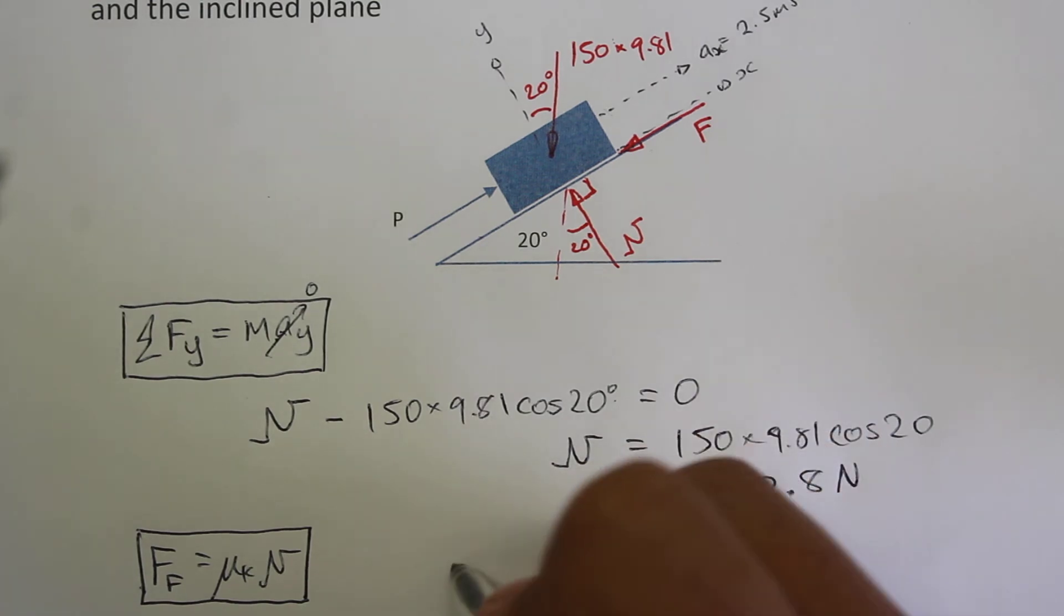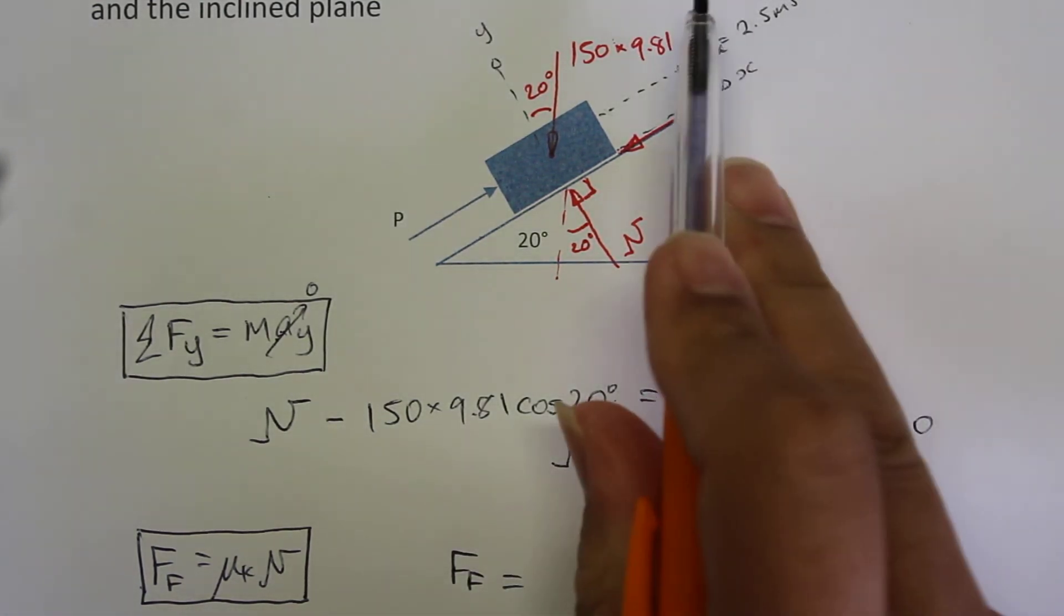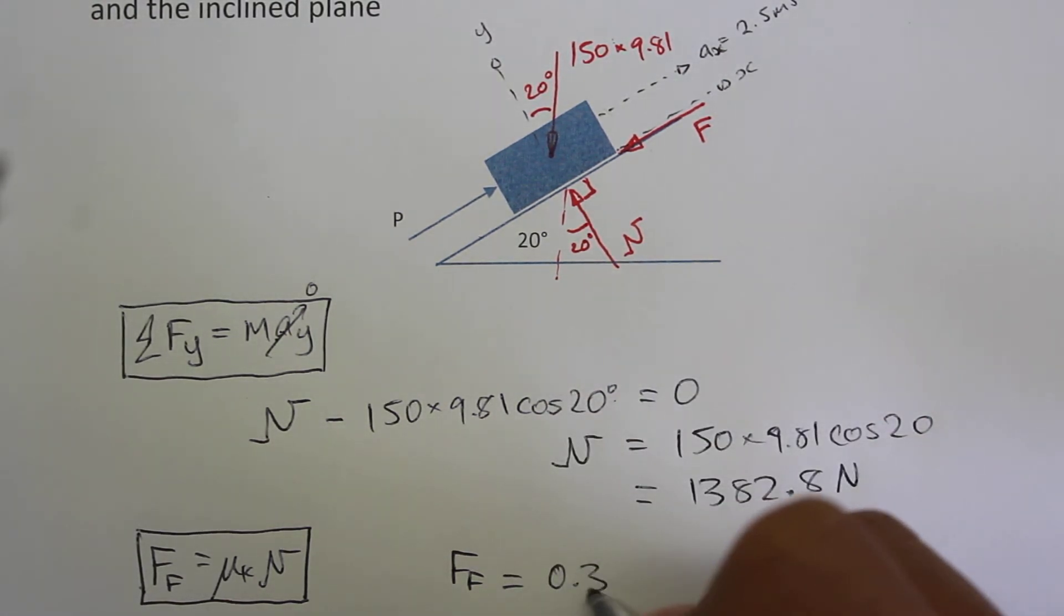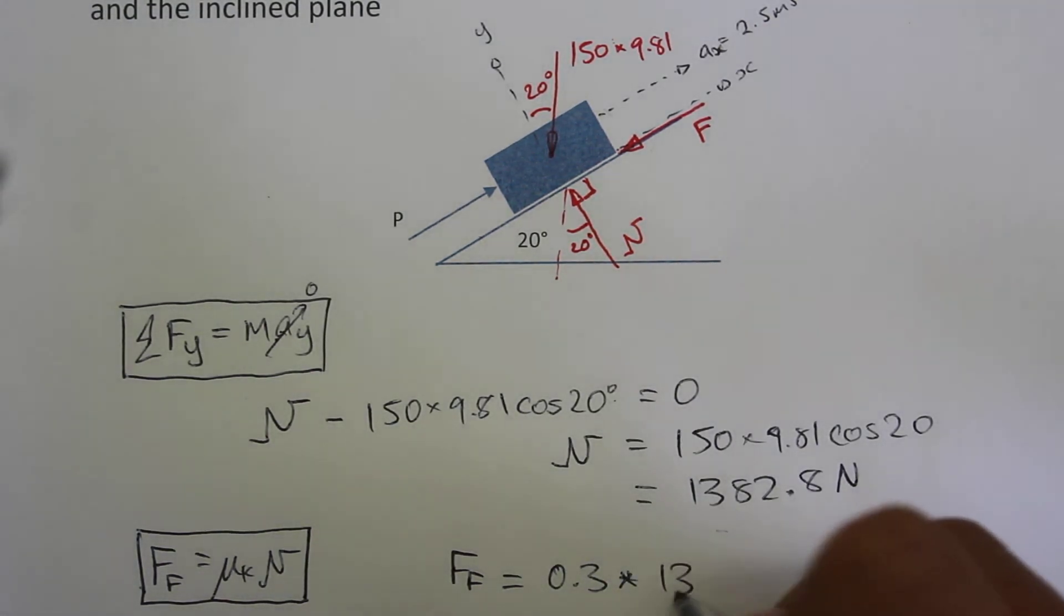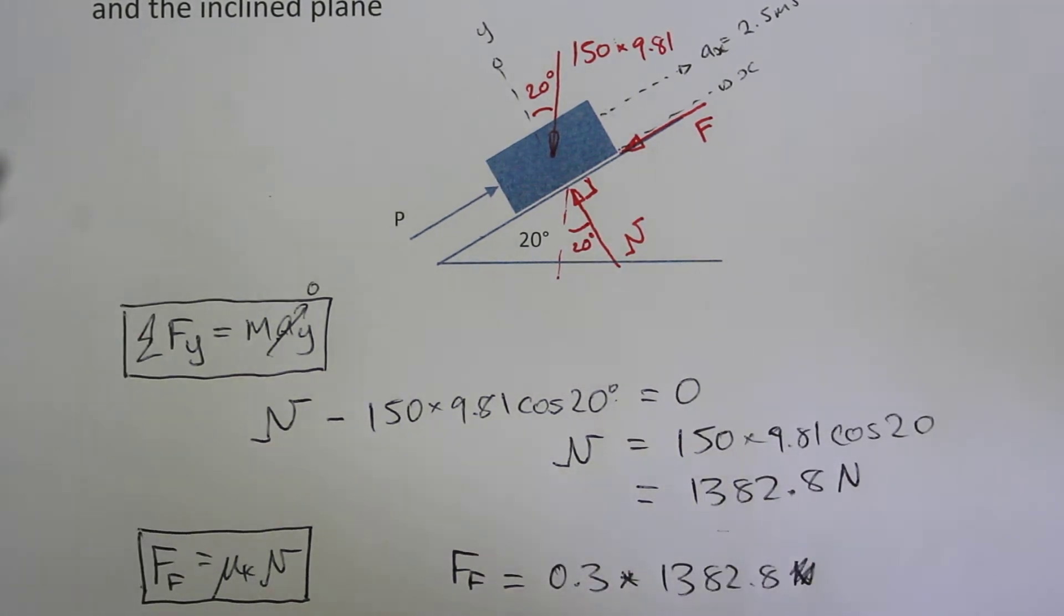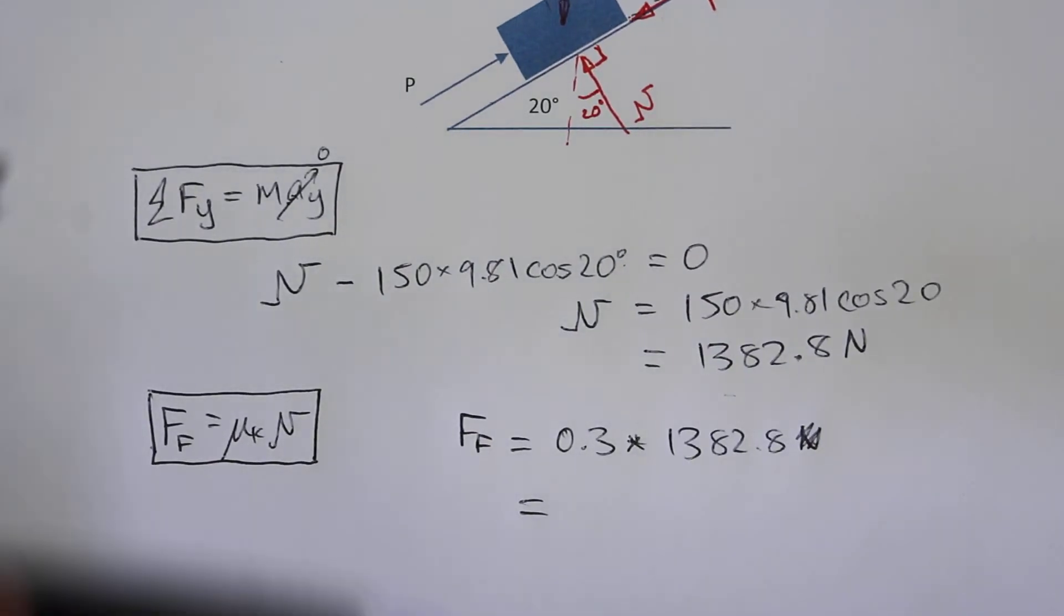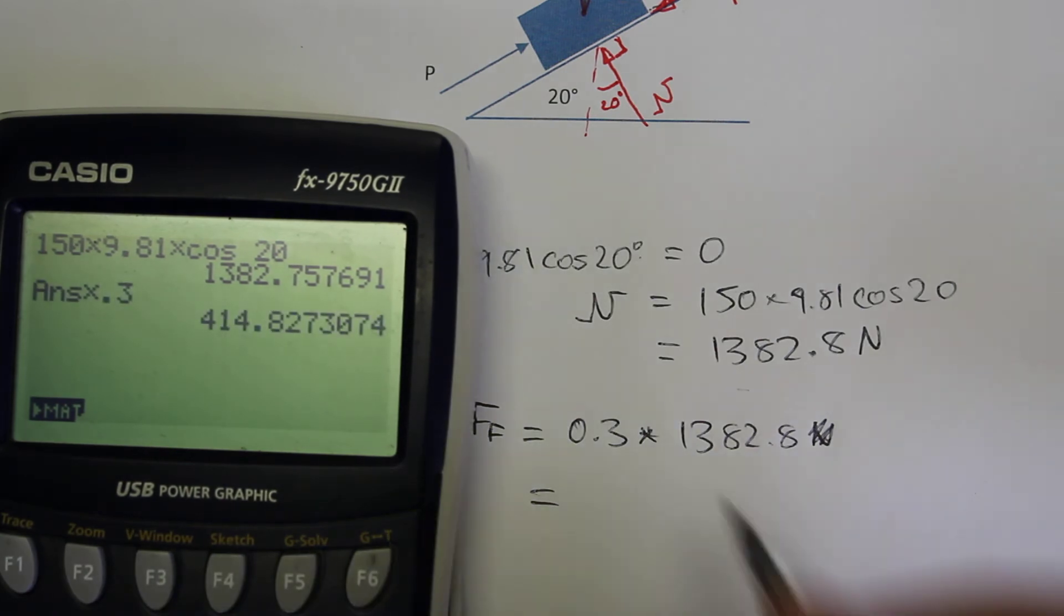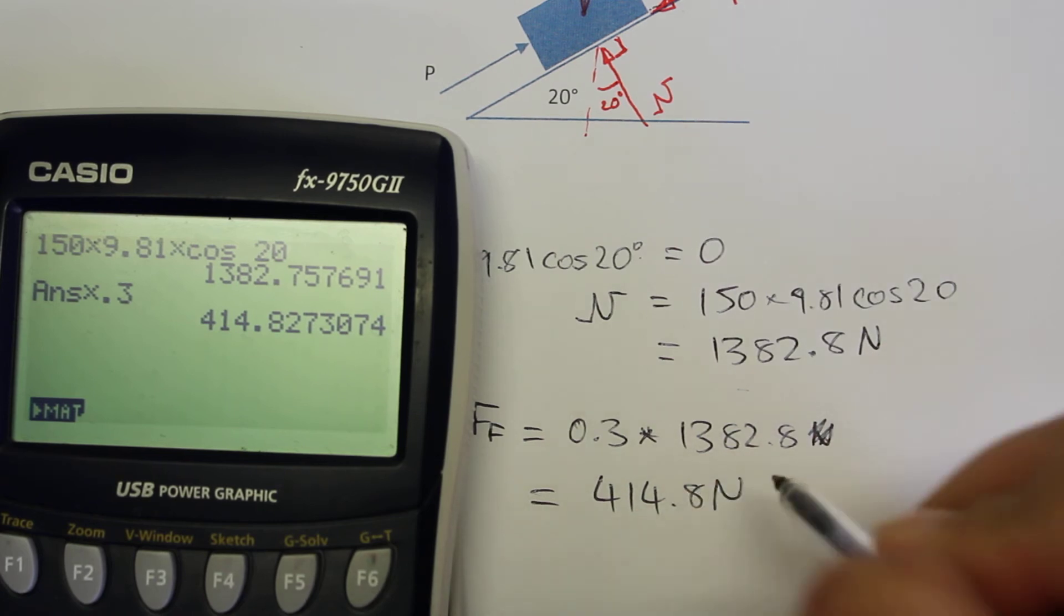So then we can find F, the force of friction, is equal to the kinetic friction coefficient, which we've had in the question as 0.3 multiplied by our normal force, which is 1382.8 newtons. And then so now we can find our value here, just by multiplying by 0.3, and the friction force is 414.8 newtons.